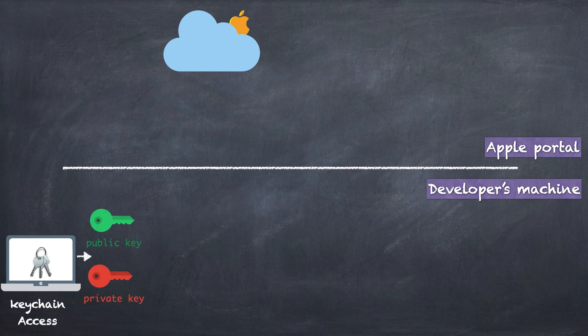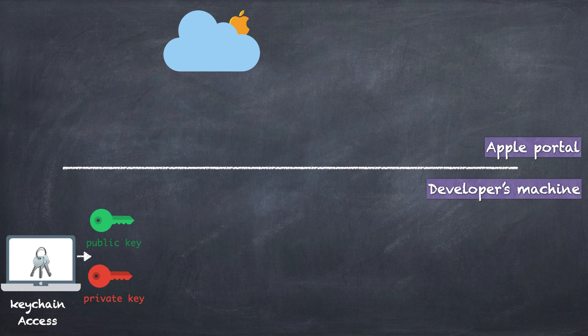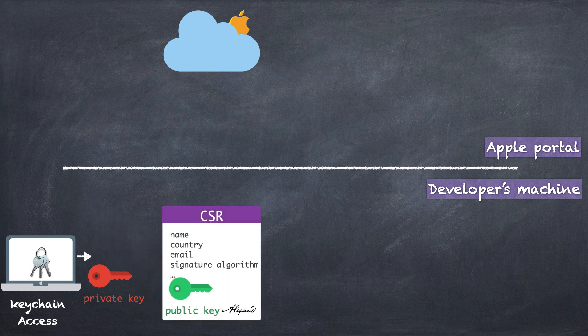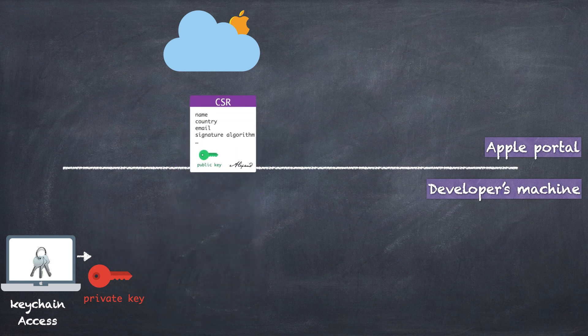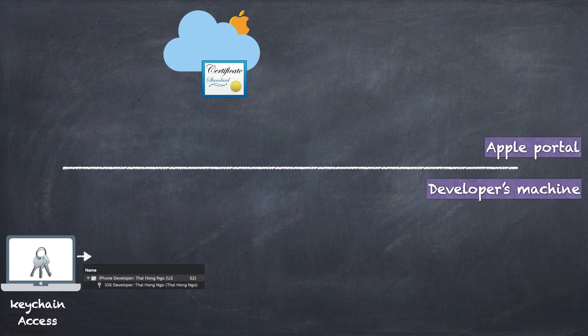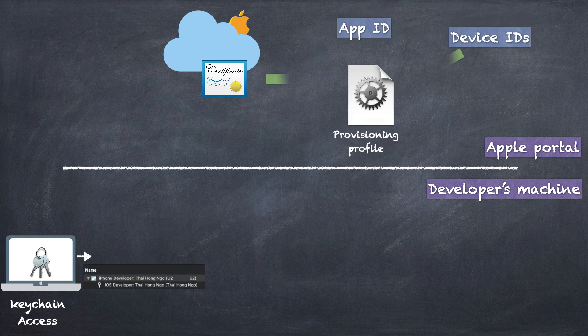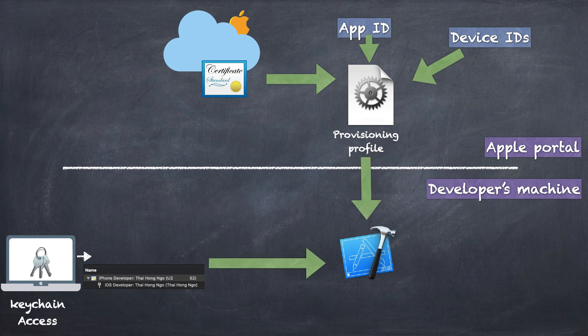Firstly, use the Keychain Access app from your Mac to create a certificate signing request. Keychain Access creates a public key and private key, then attaches the public key and important information into the certificate signing request. On the Apple Developer Portal, use the CSR to generate a certificate, download, and install it. After that, use the certificate you have just created, your app ID, and device IDs to create a provisioning profile. Download the profile, import it into Xcode to sign the app, and run on real iOS devices.